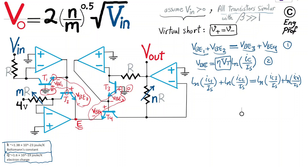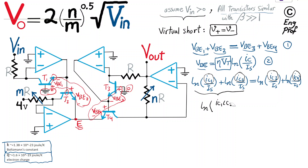Since the logarithm is a one-to-one function, two equal logarithms of positive quantities imply the arguments are equal. So IS² cancels from both sides, giving us equation 3: IC1 · IC2 = IC3 · IC4.